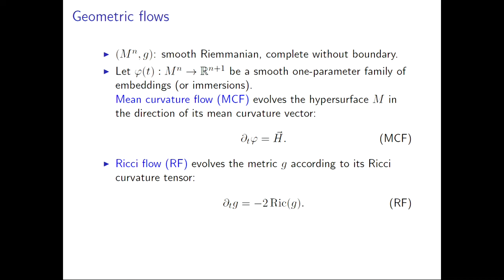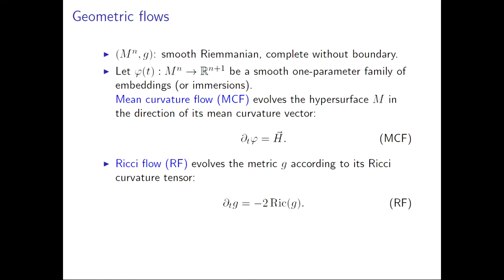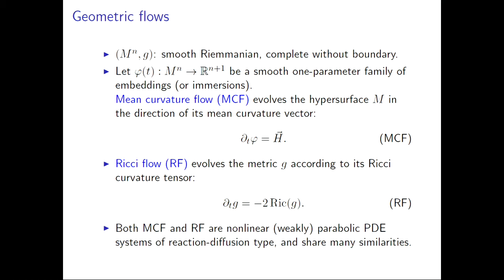The Ricci flow is something similar, but it's an intrinsic version. If you take the Riemannian manifold and consider a metric g, you just deform it in the negative direction of the Ricci. Both of these two flows are nothing but nonlinear parabolic equations and they're very similar in many aspects. That's why a lot of people study them alongside each other, and I'm including them in the same talk. They are also of reaction-diffusion type.